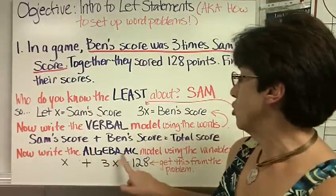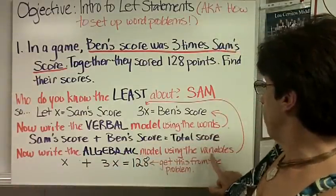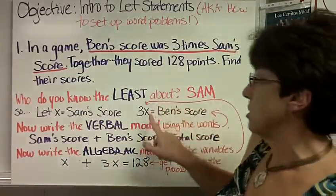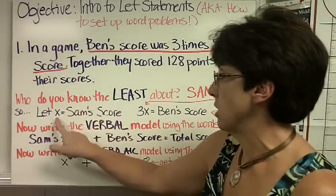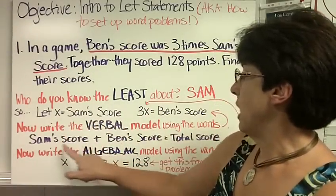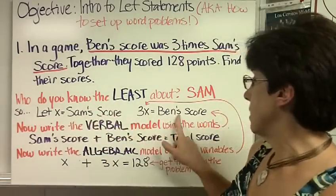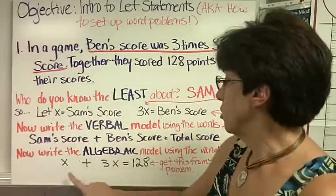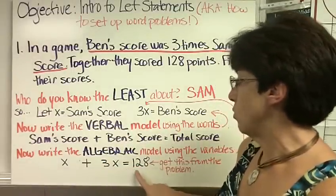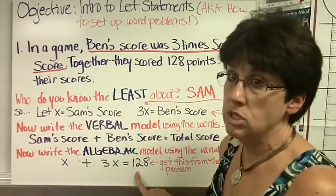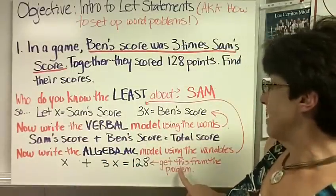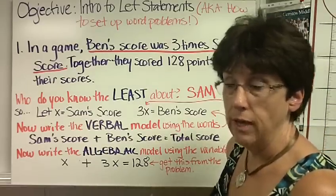Now, we need to write the algebraic model using the variables. That's where this arrow is going over to show you. Here's the variable. Here's the other variable. So, we had Sam's score plus Ben's score. Sam's score is x. Ben's score is 3x. So, we write x plus 3x equals 128, which is the total score. You get this from your problem.